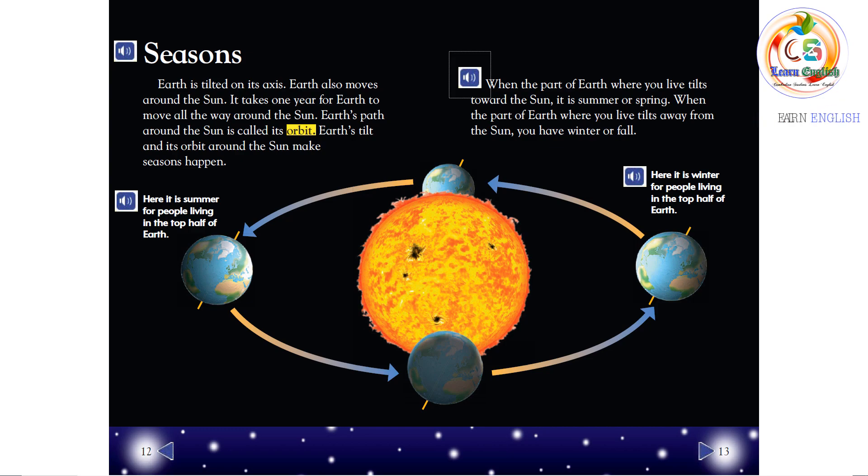When the part of Earth where you live tilts toward the Sun, it is summer or spring. When the part of Earth where you live tilts away from the Sun, you have winter or fall. Here, it is summer for people living in the top half of Earth. Here, it is winter for people living in the top half of Earth.